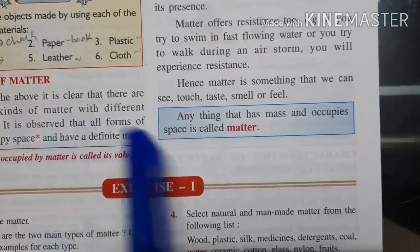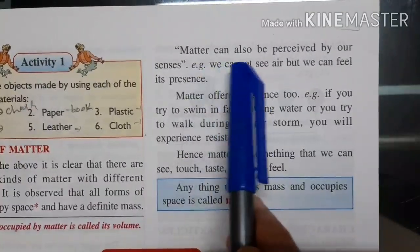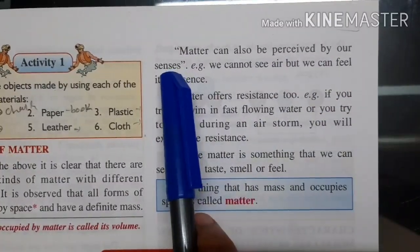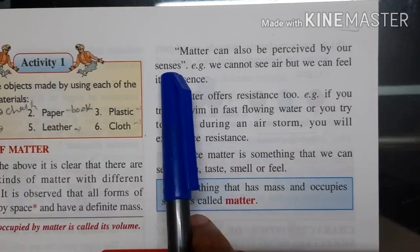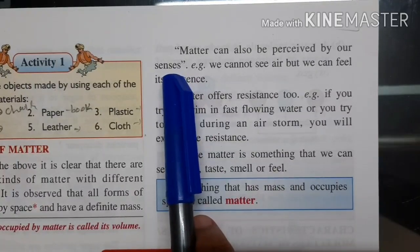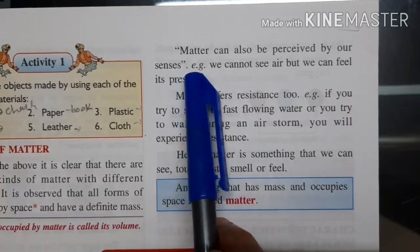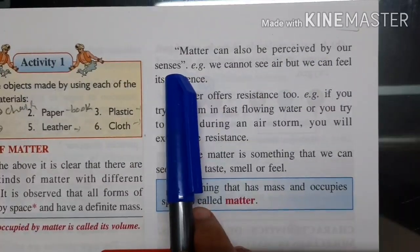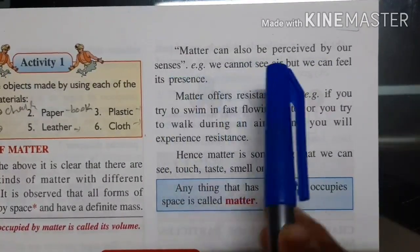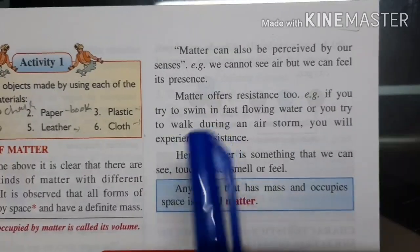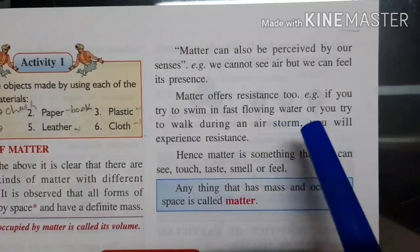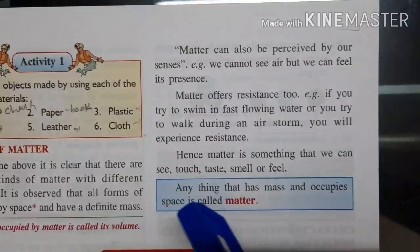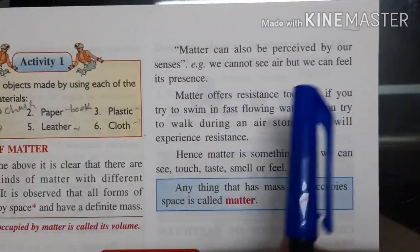Matter can also be perceived by our senses. Whatever we can see, touch, feel, or taste — every single thing is known as matter. So matter can be perceived by our sense organs. You know the five sense organs: eye, nose, ear, tongue, and skin. Through these, whatever we can find or feel is known as matter.